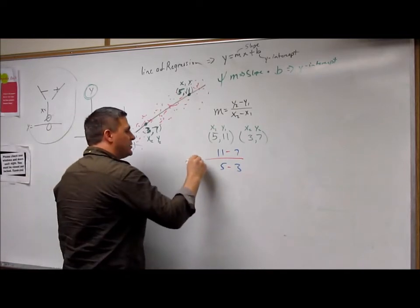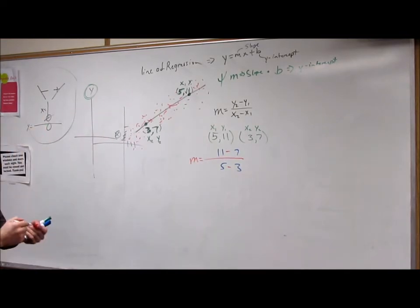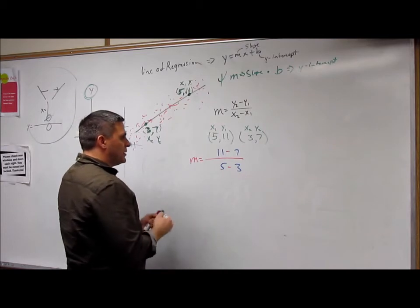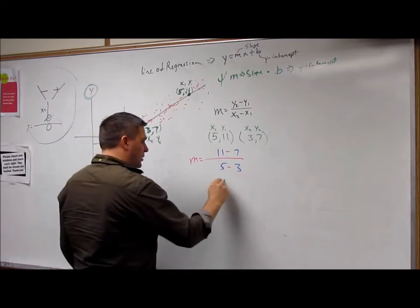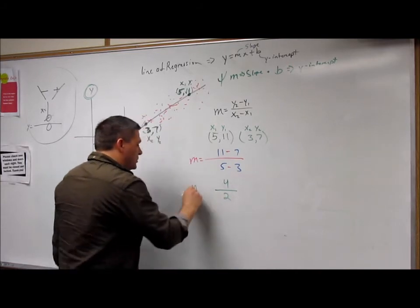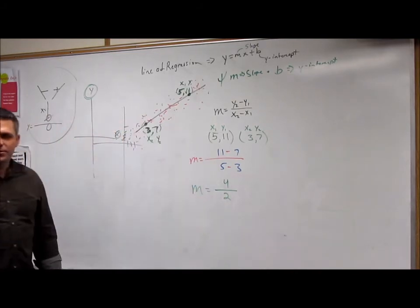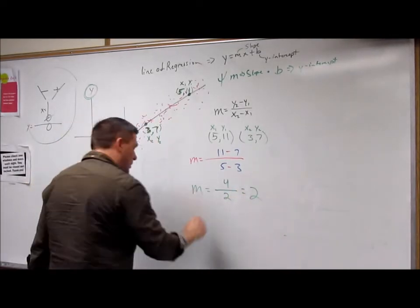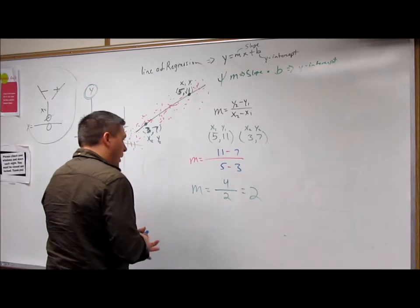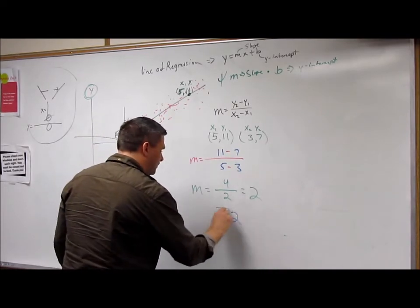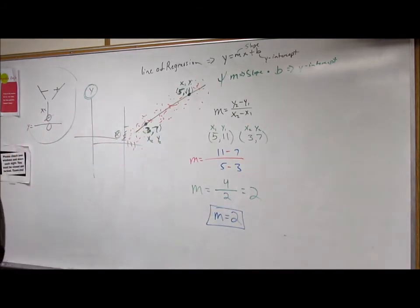And that's m, that's your slope. So when we do that, then I have 11 minus 7, which is 4, and 5 minus 3, which is 2. So m equals 4 over 2, which equals 2. So m equals 2. So I know my m.